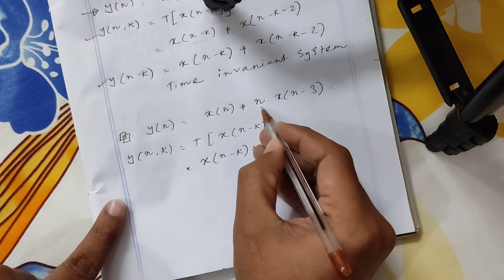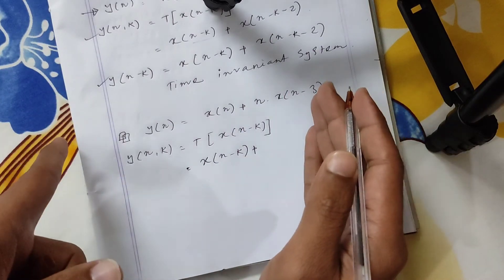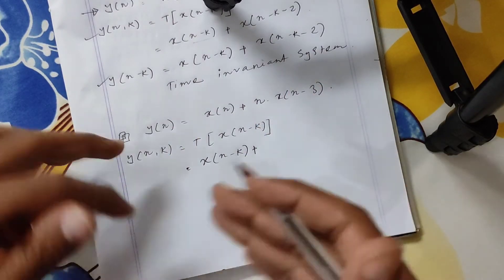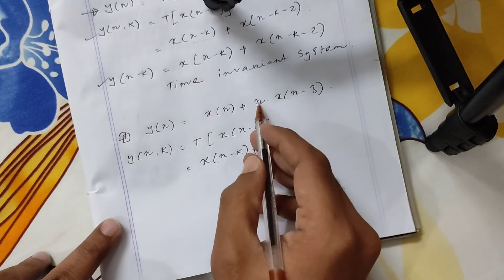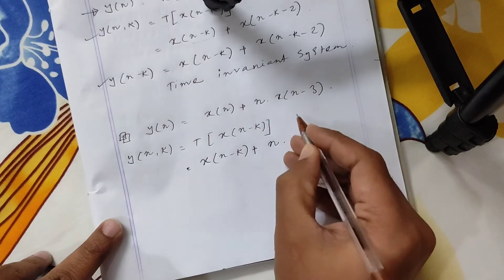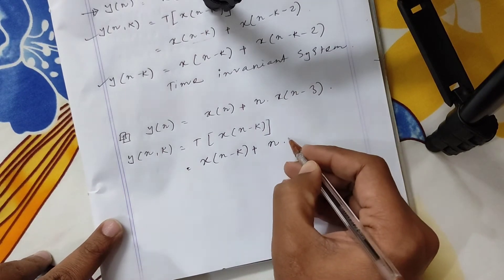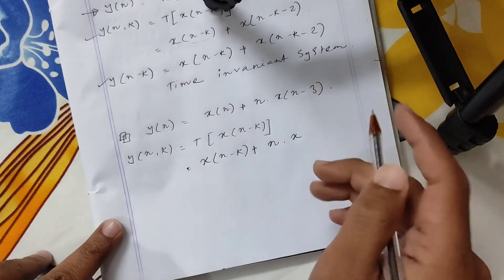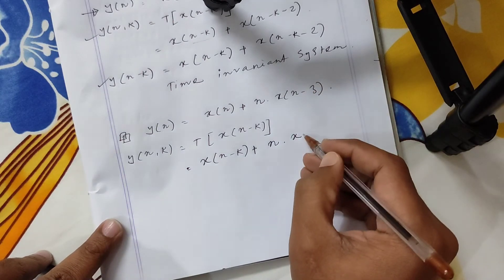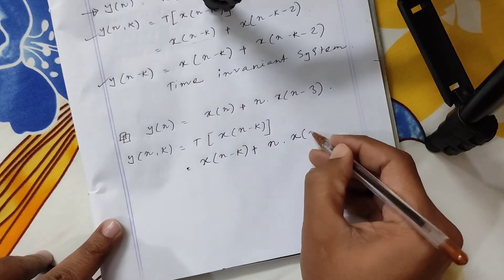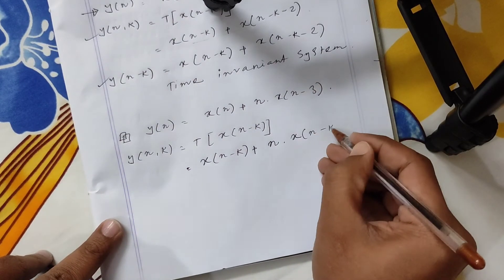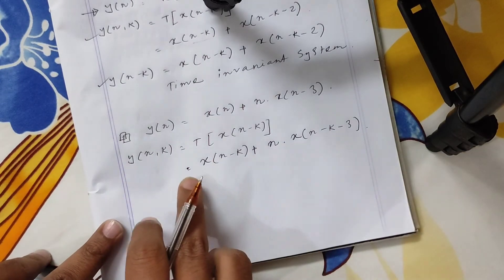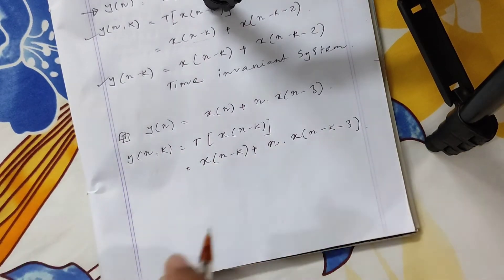Here, only x changes. x of something. So x[n] will be changed to x[n-k], and x[n-3] will become x[n-k-3]. So y[n,k] is obtained by this substitution.